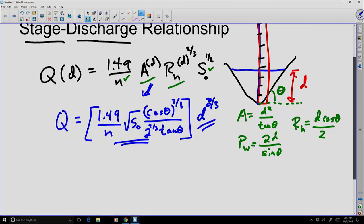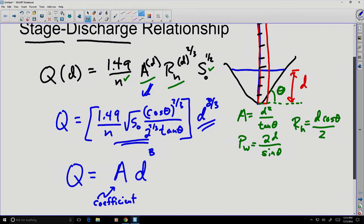Now, more generally, we can write it this way: Q, the discharge, is equal to some coefficient times the stage to the power of some exponent. In this case, you could see where the exponent would be eight-thirds and the coefficient would be dependent upon all those other values. There's our coefficient, and here we have an exponent.